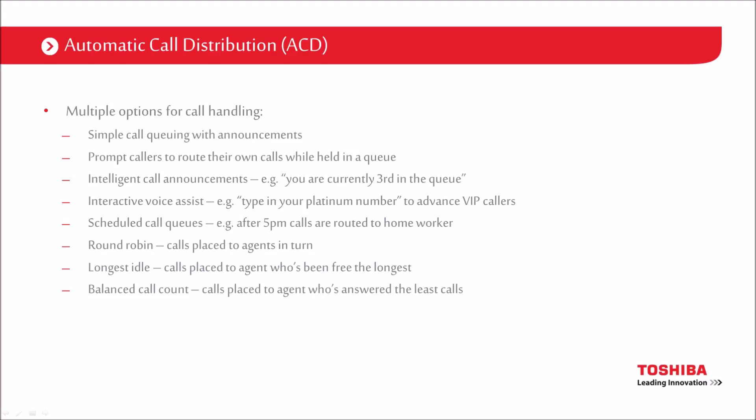We can run schedules on the call queues. After five o'clock, for example, we could route to a home worker or to our American office. We can choose where we route the calls based on every second of the day, allowing us to provide lunchtime cover or follow-the-sun type coverage. As far as routing patterns are concerned, we can do round robin — calls placed to agents in turn — or longest idle, where the person who hasn't been on the phone for the longest period of time gets the next call.